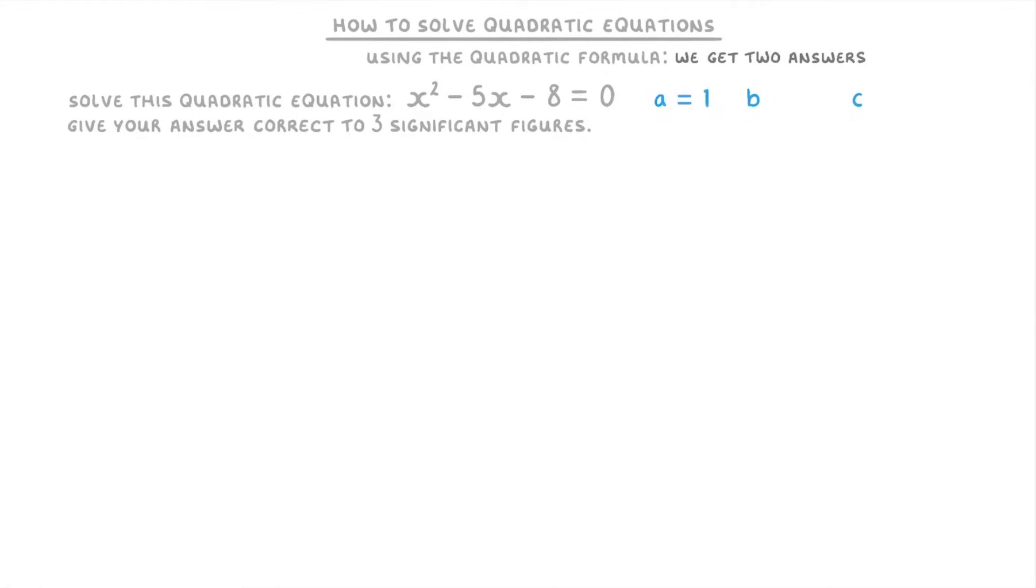So a is 1, because if there isn't a number in front of the x², then there's effectively 1x². b is -5, and c is -8.